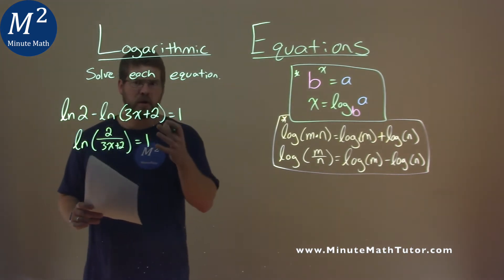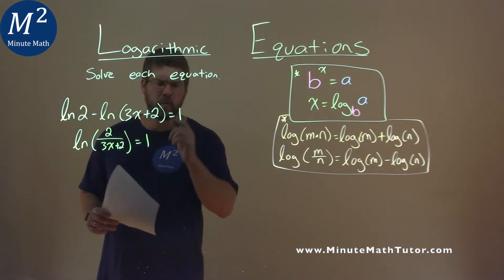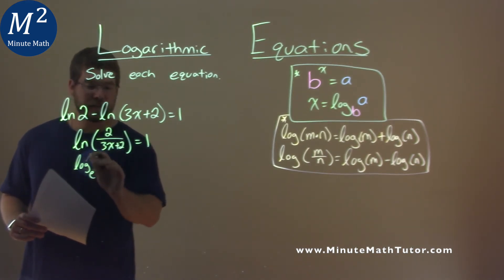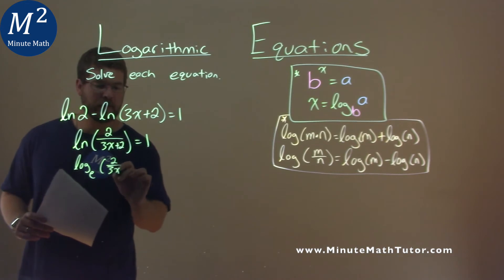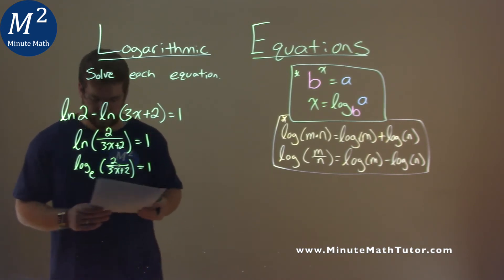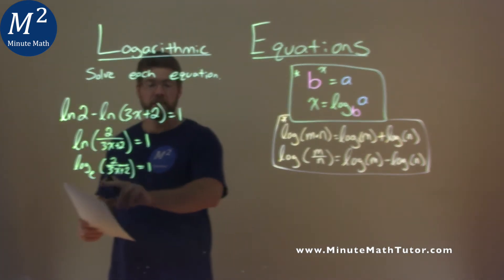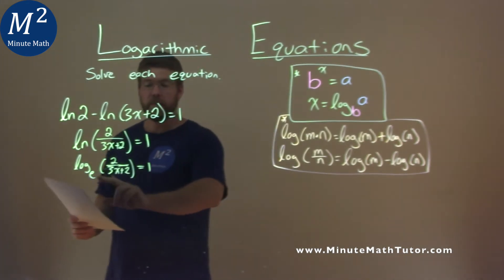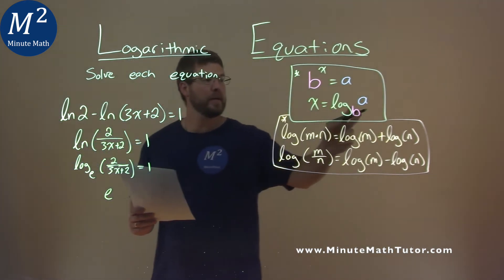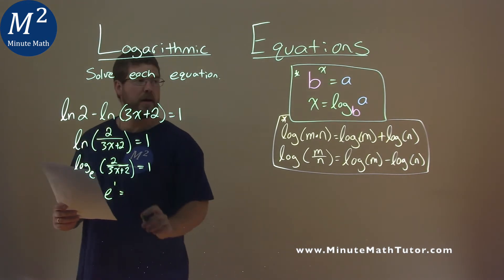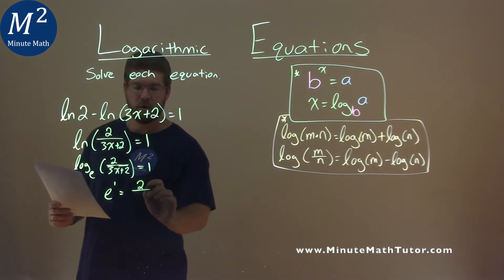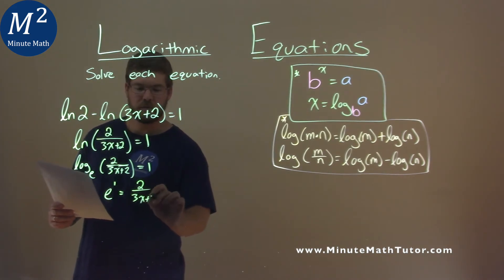So this becomes the natural log of 2 divided by 3x plus 2, and that equals 1. Natural log is log base e, so we have log base e of 2 over 3x plus 2, equal to 1. We're going to use our top formula. Our base is e — the b value — and we raise it to what the logarithm equals, which is 1. That equals the a value: 2 over 3x plus 2.